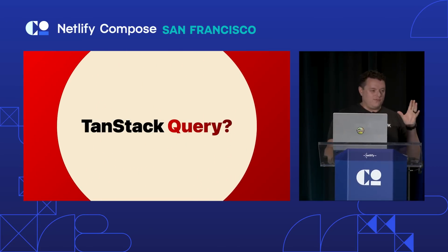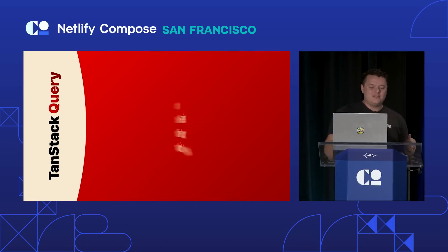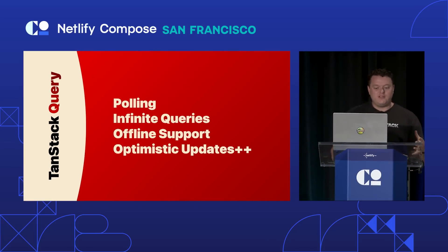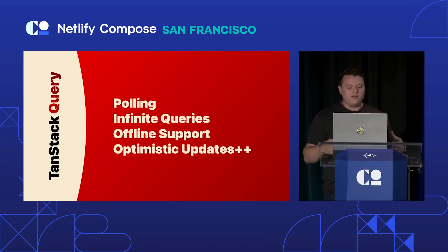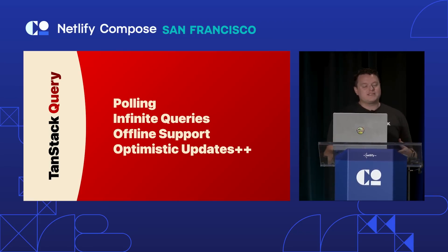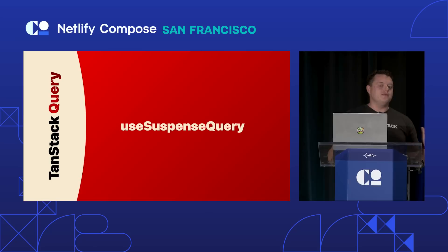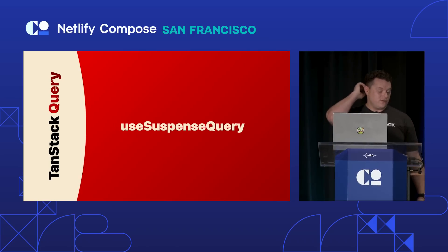But what if you do want to use React Query? We can do even cooler stuff. React Query obviously opens up features like interval polling, infinite queries, and offline support, and it has way better optimistic updates than we were able to pack into the router. What I'm really excited about is useSuspenseQuery, which for the past few months has been packing some hidden features inside it that help build really great integrations with routers.